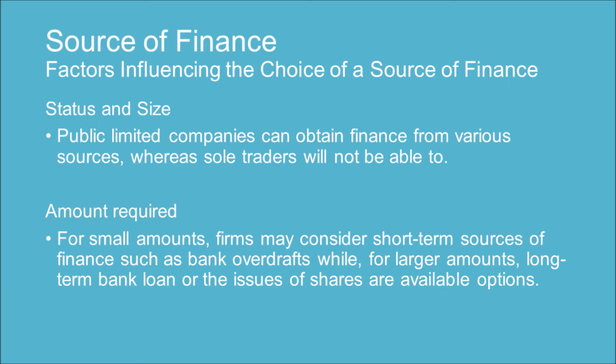Status and size — public limited companies can obtain finance from various sources, whereas sole traders will not be able to. Amount required — for small amounts, firms may consider short-term sources of finance such as bank overdrafts, while for larger amounts, long-term bank loans or the issue of shares are available options.